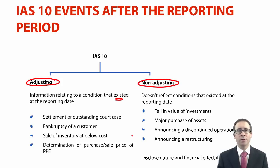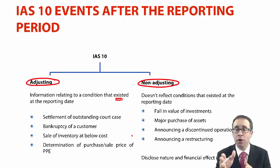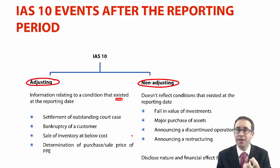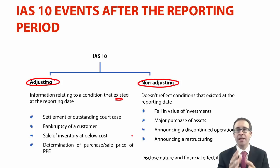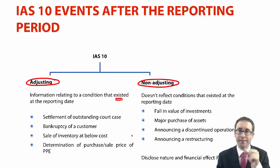Maybe a bit more relevant to P2 is if you have a non-current asset held for sale that is then disposed of by the end of the year, but you do not know what the selling price is. It was held for sale and disposed of before year end, so it isn't still a non-current asset held for sale at year end. There's an agreement the sale will take place and we're negotiating the price. Once we know the price subsequent to the reporting date, we can work out the profit or loss on disposal at the reporting date.